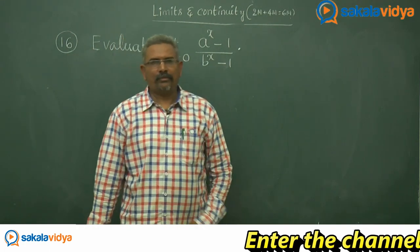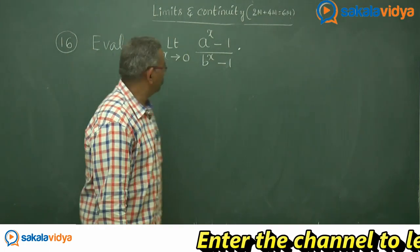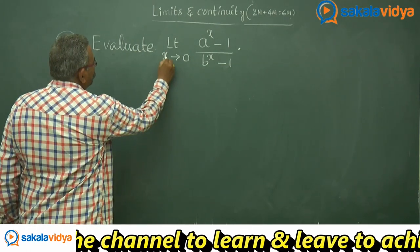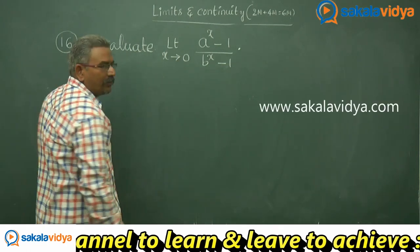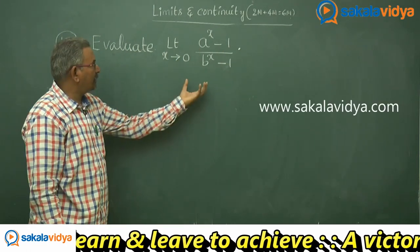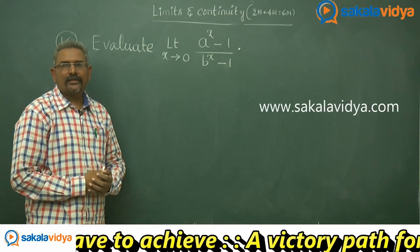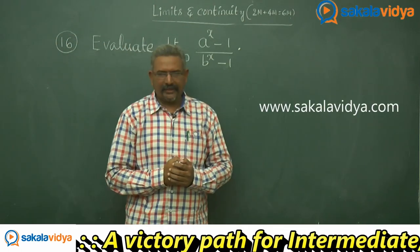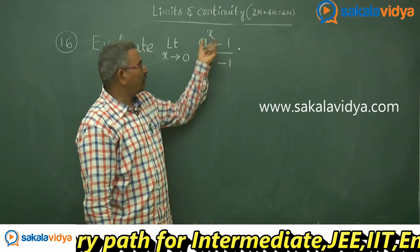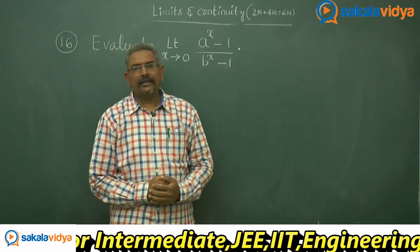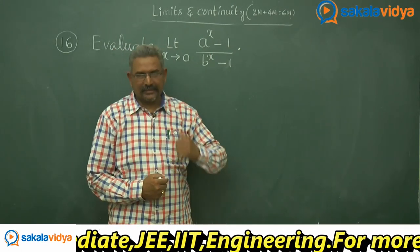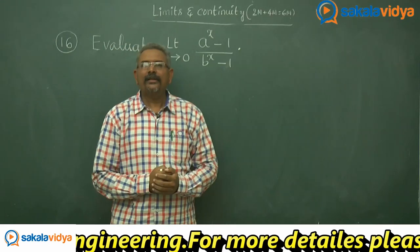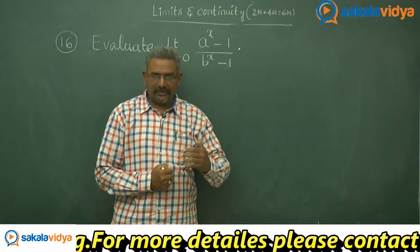Let us solve one more problem. Evaluate the limit as x approaches 0 of (aˣ - 1) / (bˣ - 1). A very simple technique has to be applied here: divide both numerator and denominator by x. The result that lim(x→0) (aˣ - 1)/x is a standard result equal to log a to the base e.